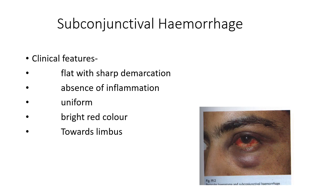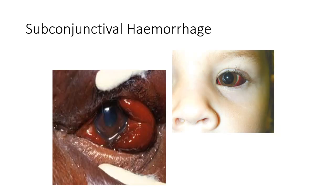Clinical features: there may be edema of the lower lid as well as subconjunctival hemorrhage. The hemorrhage has a flat appearance with sharp demarcation, absence of inflammation, uniform bright red color, and is towards the limbus.